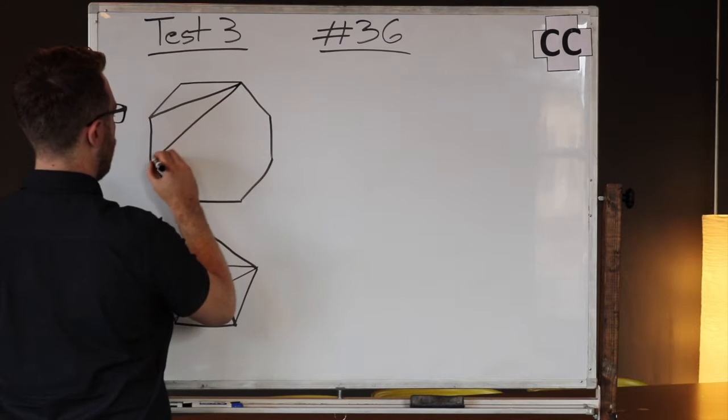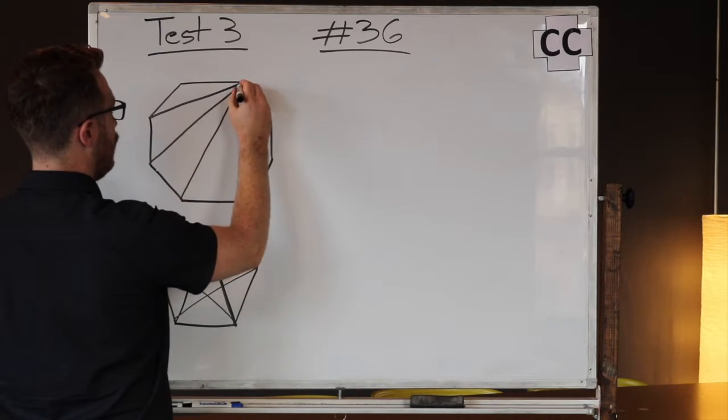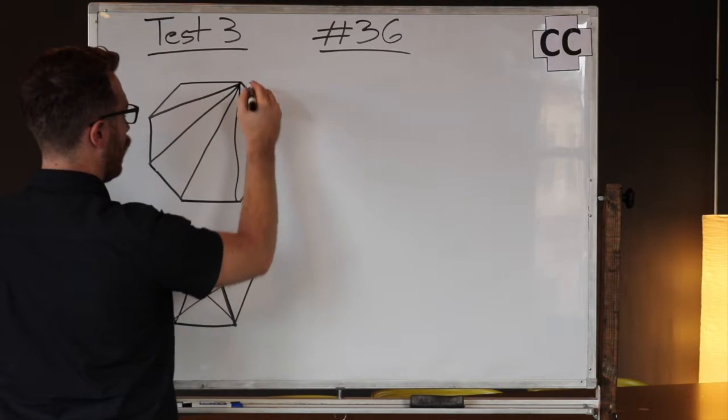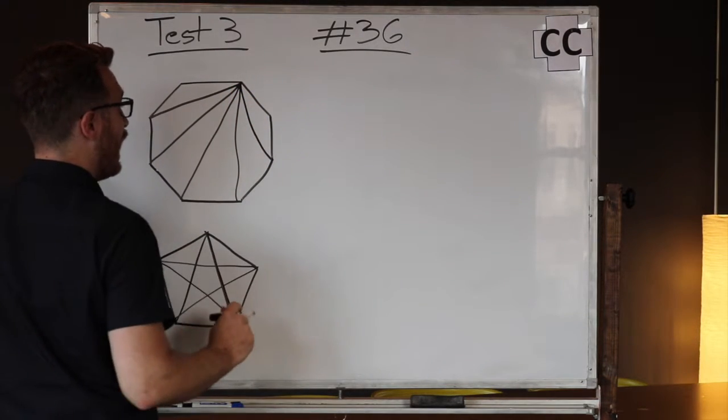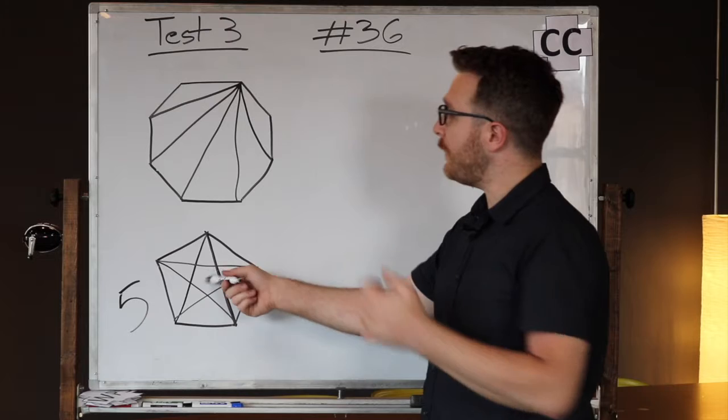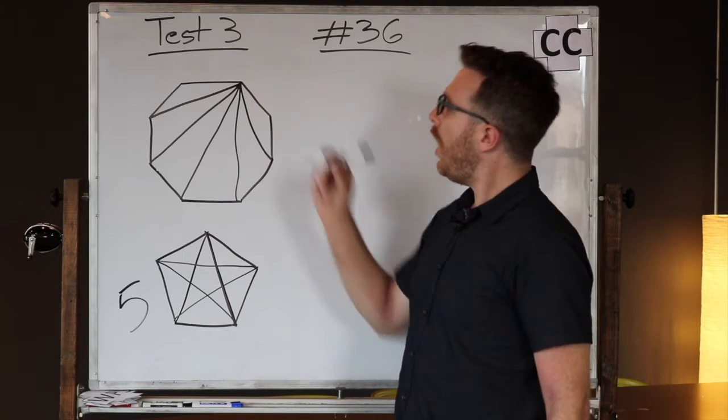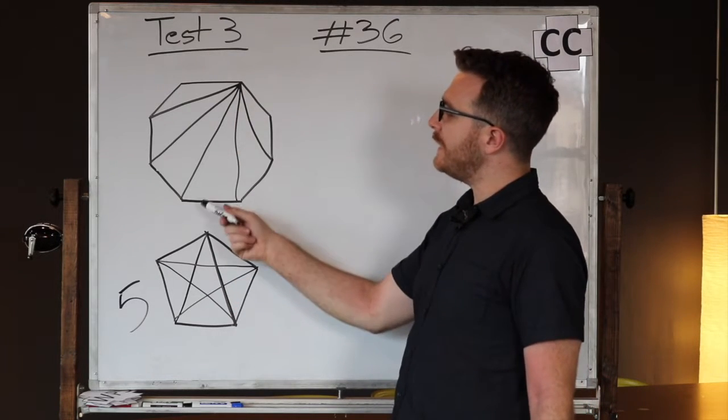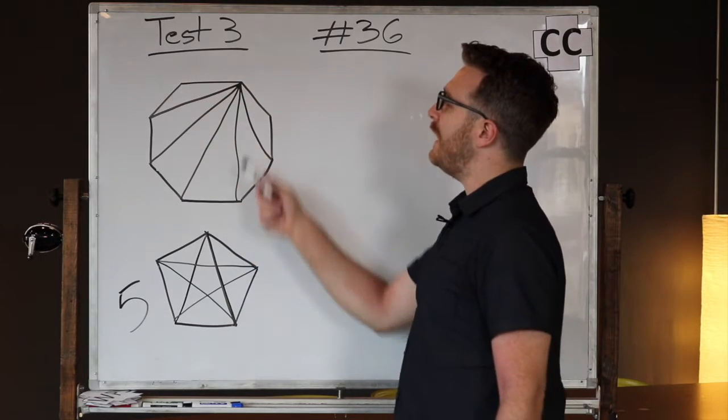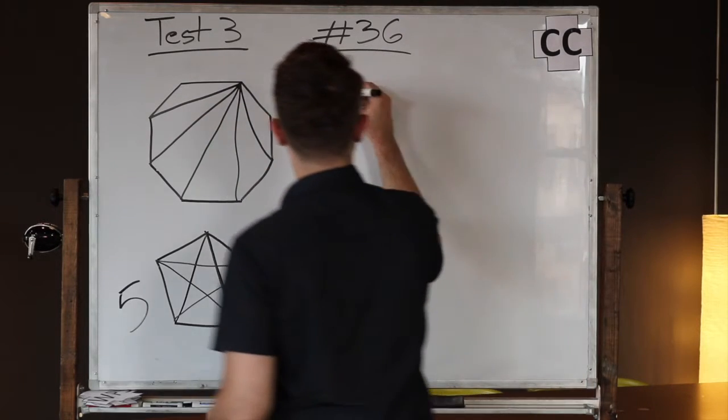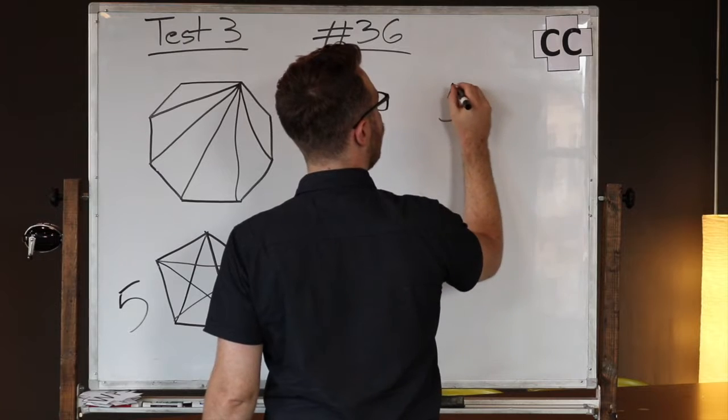One, two, three, four, and five. Now just like the pentagon we would think, okay there's five lines coming out of this one and there's eight sides. Five times eight is 40.